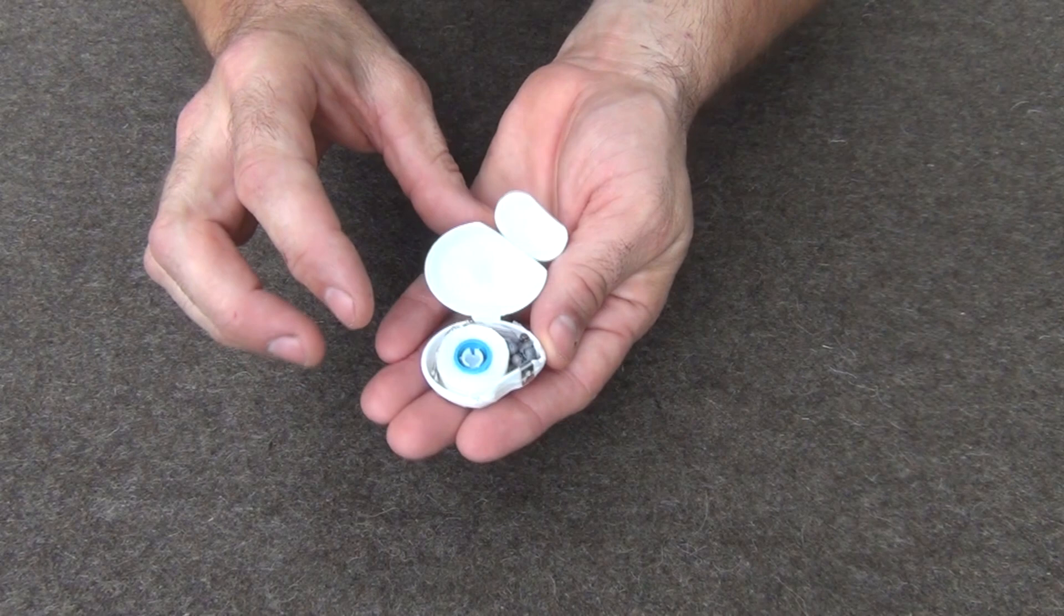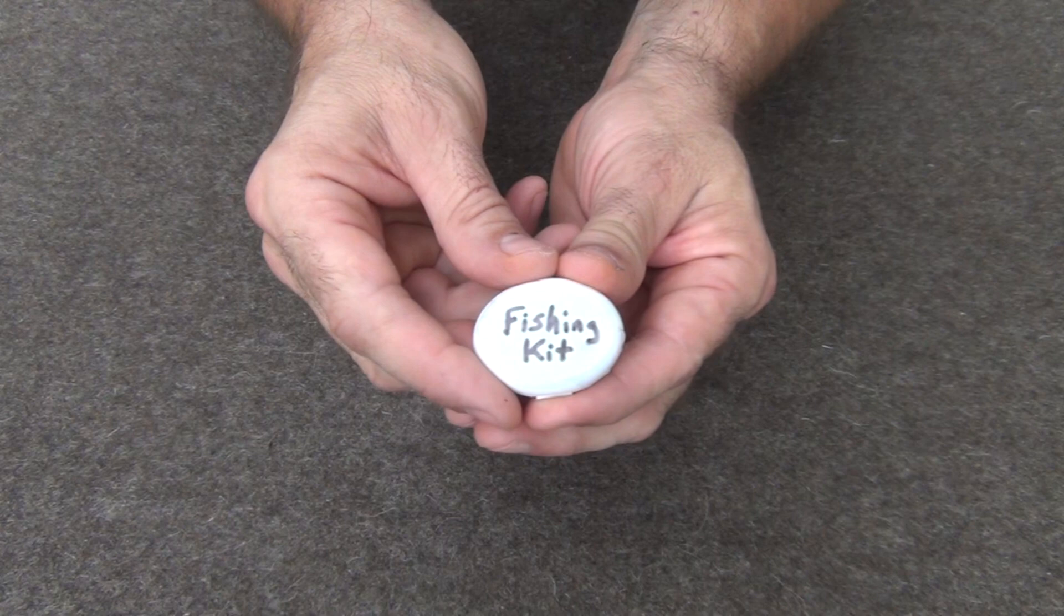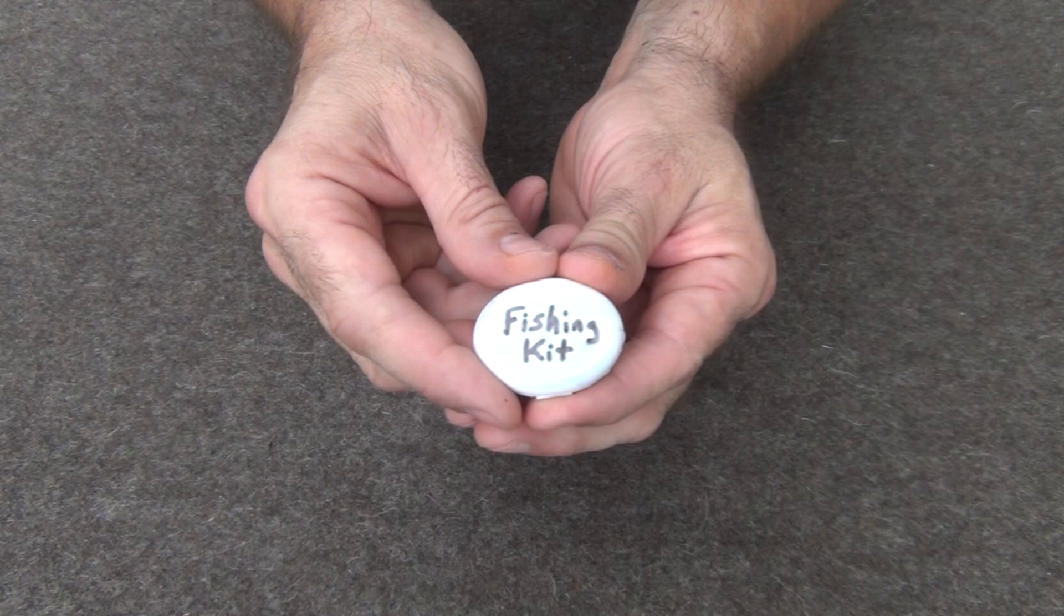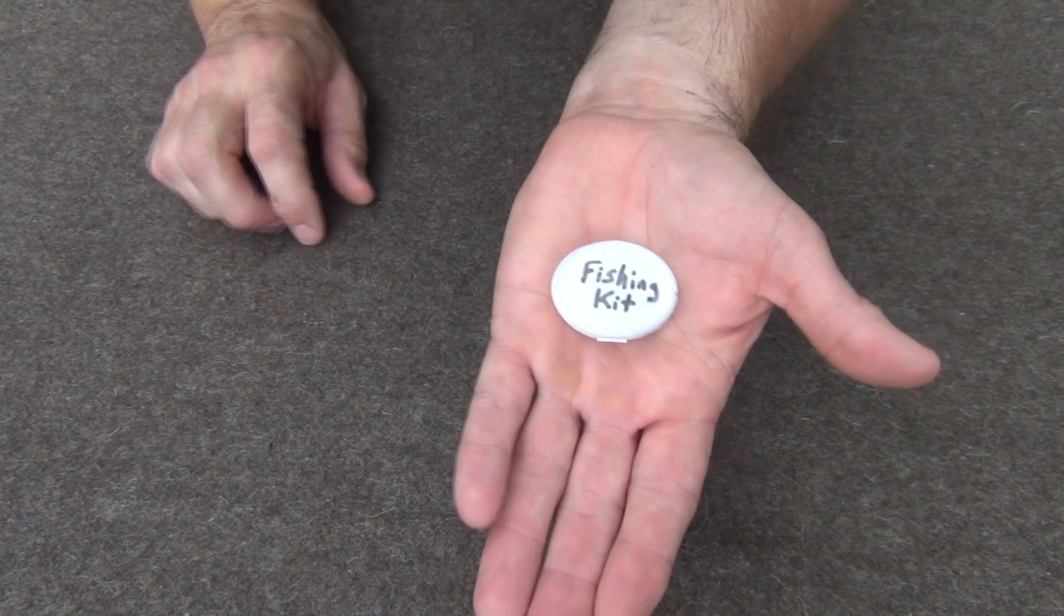And now that our fishing kit is all assembled, we snap it together, just like this, I close it, I wrote fishing kit with a sharpie, and then covered it with a piece of tape to protect the letters from rubbing off. And there we have the world's smallest pocket fishing kit.